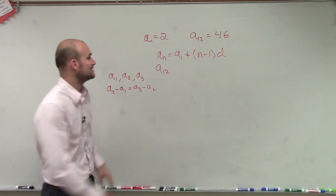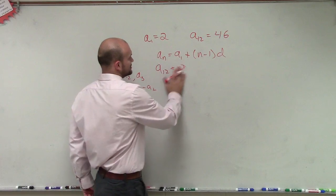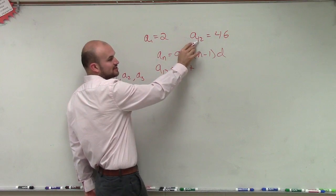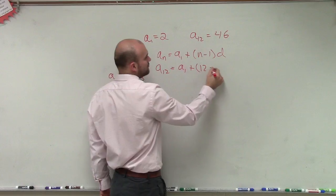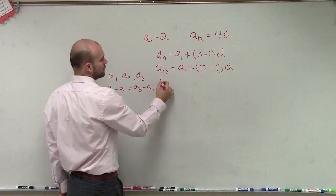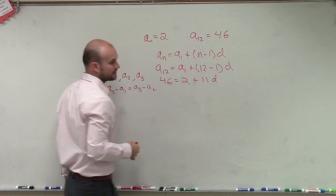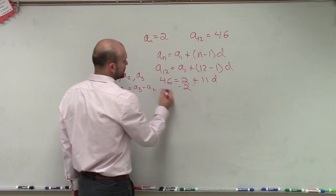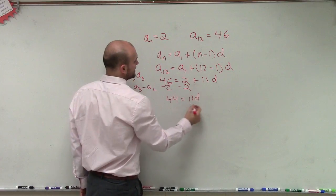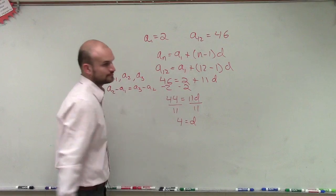So we want to figure out what a₁₂ is. a₁₂ = a₁, which we know is 2. So a₁ plus, since I'm finding a₁₂, that's going to be n = 12, so 12 - 1 times d. So a₁₂, which was 46, equals 2 + 11d. Subtract 2: 44 = 11d. Divide by 11, and you get 4 = d.